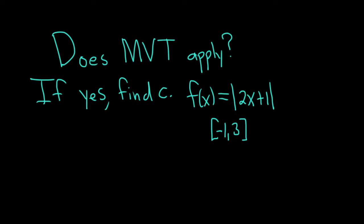Hello. In this problem we're being asked if the mean value theorem applies, and if it does, find the value of c that the theorem guarantees exists. The function in question is f(x) = |2x+1| on the interval [-1,3].